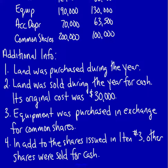What is it? Land was purchased during the year. Land was sold. As soon as we know that land was sold, we're going to have to do something about it. During the year for cash, its original cost was $30,000. Equipment was purchased in exchange for common shares. In addition to the shares issued in item number three, other shares were sold for cash. So I know this information requires me to do a T-account proof.